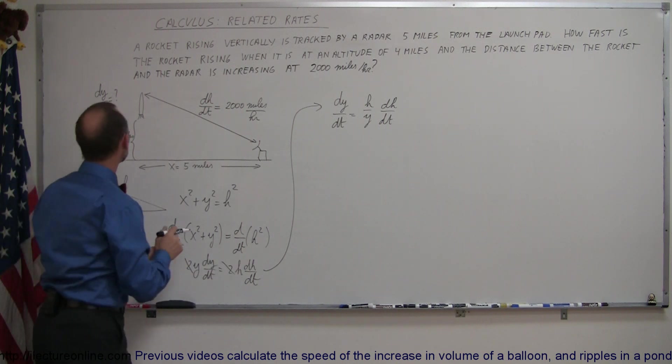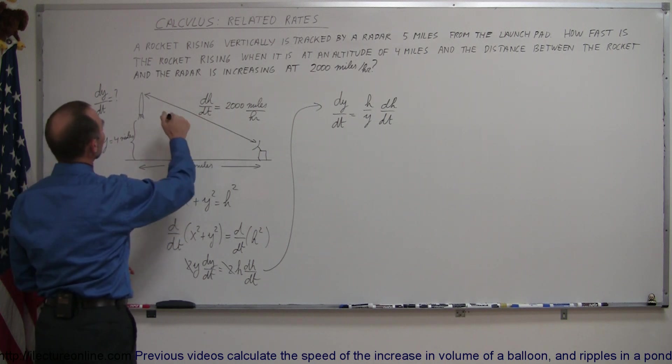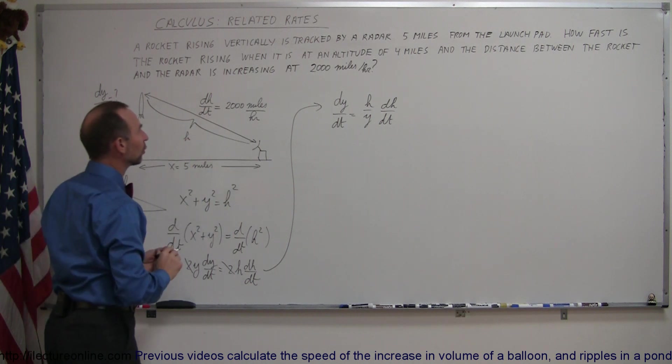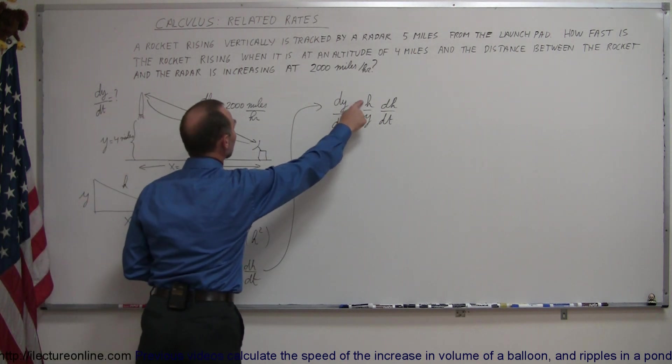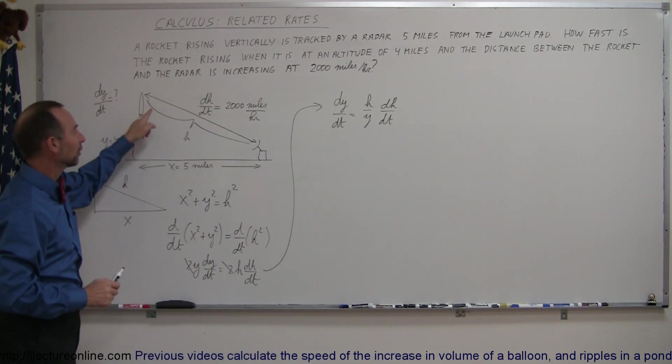Now, we want to know what dy dt is when y is 4 miles, when h is, well, we don't know yet what h is. So in order to solve the equation, not only do we need to know y, we also need to know h. And the dh dt is given. So how do we find h?